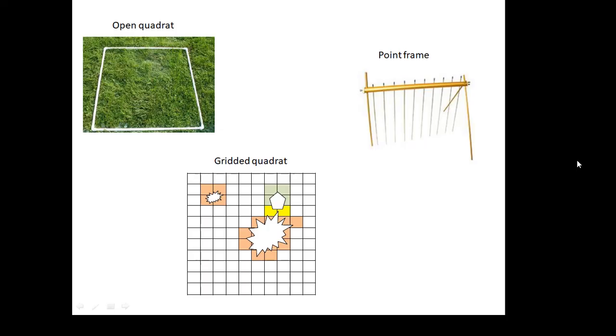Yeah, if it's a third of a third. So, 0.1 meters squared. The gridded quadrat may be made up of a certain number of little squares. And then a point frame is 10 pegs that touch the ground.